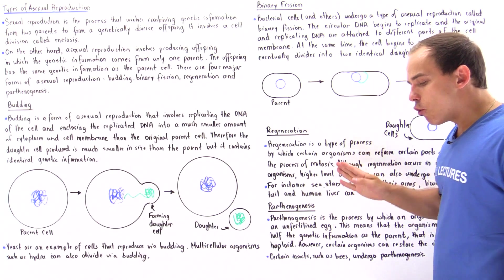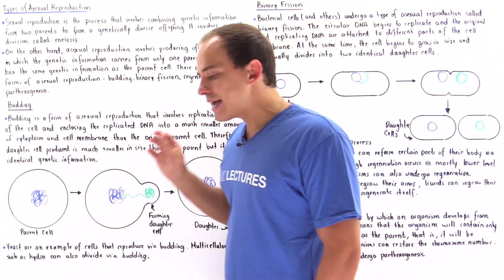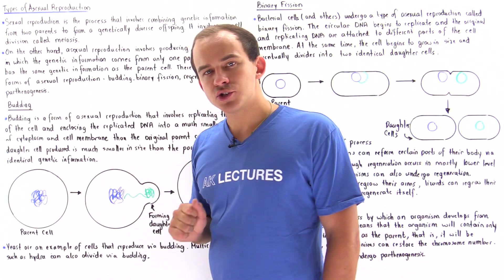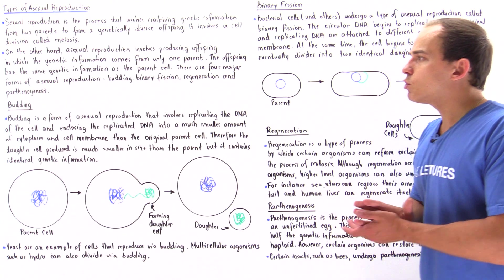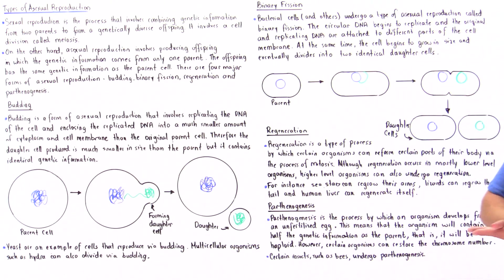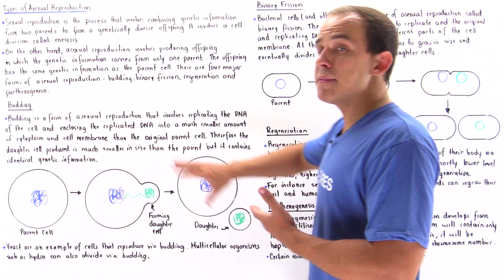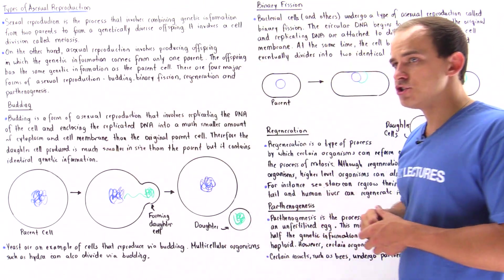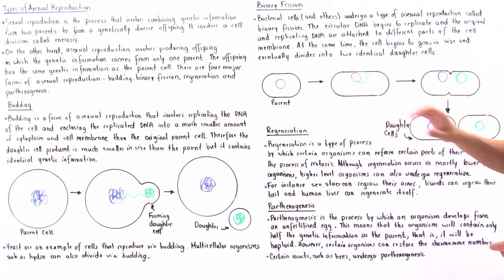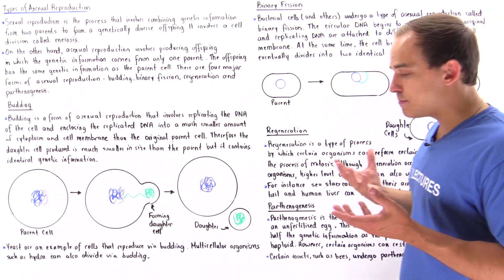There are four major types of asexual reproduction processes we'll discuss in this lecture: budding, binary fission, regeneration, and parthenogenesis.